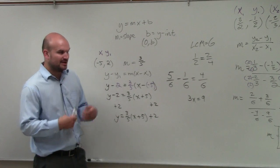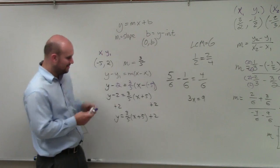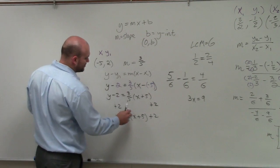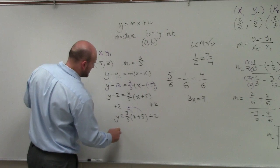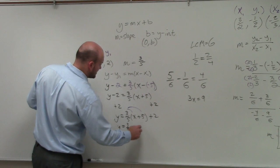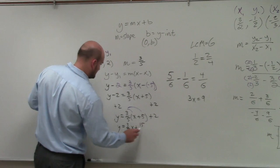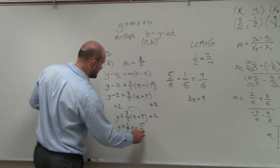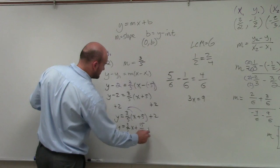That is the equation of the line. But if we wanted to write it in slope-intercept form, then we'd have to apply the distributive property here. So you obtain y equals 3 fifths x plus 15 fifths plus 2.